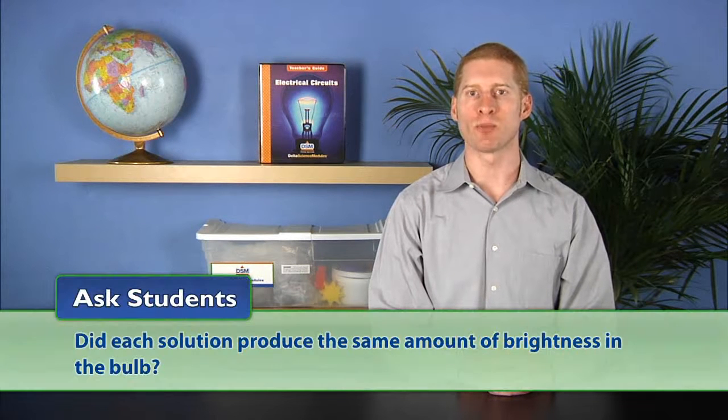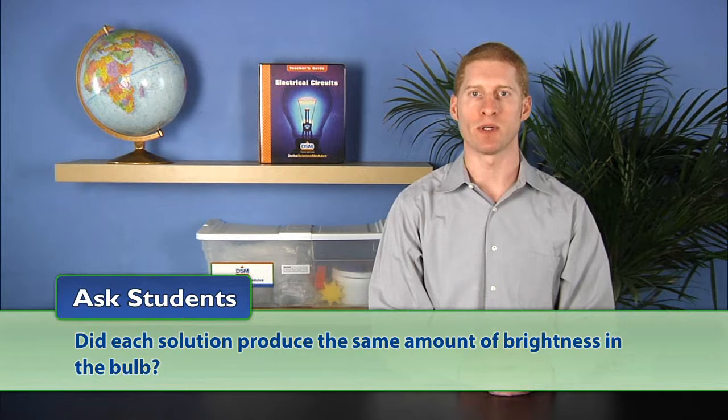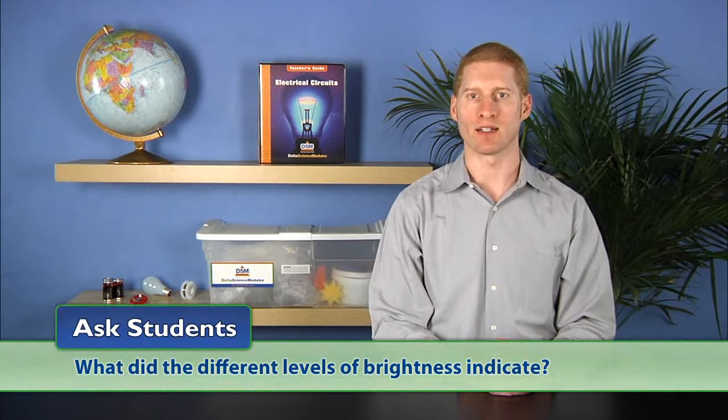After they have completed their tests, discuss with students the results and ask: Did each solution produce the same amount of brightness in the bulb? Students should have observed that each solution did not produce the same amount of brightness. Then ask: What did the different levels of brightness indicate? Help students understand that some solutions conduct more electric current than others.